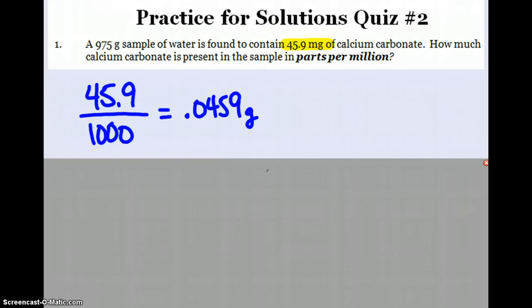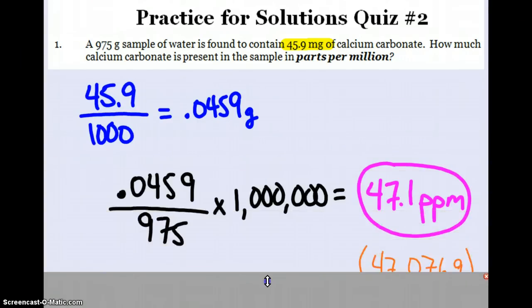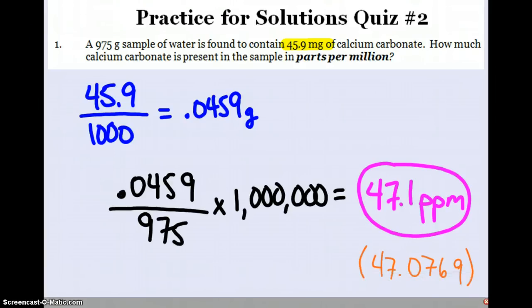That 45.9 milligrams, first thing we need to do is change that to grams by dividing by a thousand. Now that we have our grams of solute, we can do the calculation comparing the solute over the 975 gram sample that was right there in the problem. When you type that in your calculator and multiply by a million since it's parts per million, the calculator spits out 47.0769. But of course we're good sig fig people and we answer to three sig figs just like the measurements in the question, so 47.1 ppm.